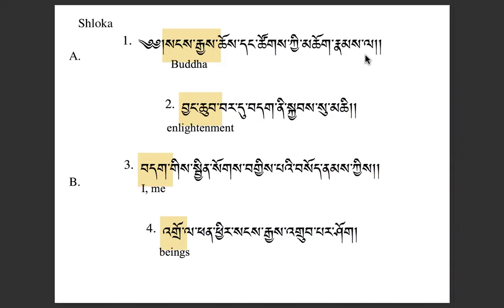And then we have law at the end. From our level one course, law was one of the first words we learned — it can be a particle meaning to, in, on, or at, like a preposition. So all together in line one, we've got something like: 'In Buddha, Dharma, and Sangha.' That's line one of part A, the refuge portion of our two-part prayer — refuge and heart of awakening.